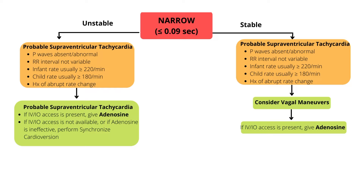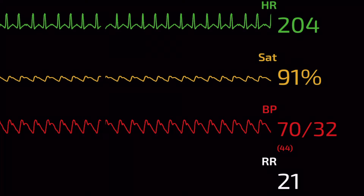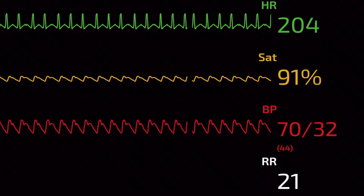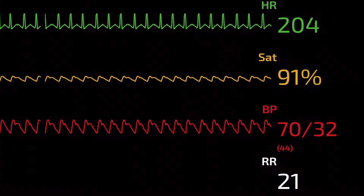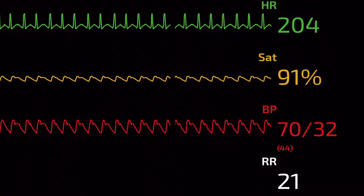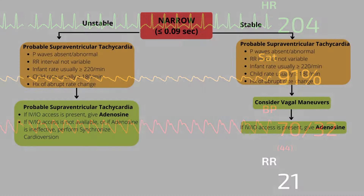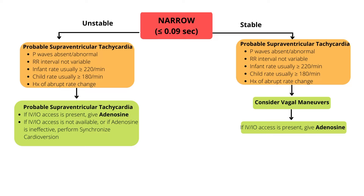If the child remains stable and the rhythm does not convert, we can try it for a second time. After a second attempt and it does not work, we can try a different method or medications. If the patient becomes unstable at any time, consider synchronized cardioversion. It is important to monitor and record the ECG continuously before, during, and after attempted vagal maneuvers. If vagal stimulation was not successful and an IV or IO is present, give adenosine.